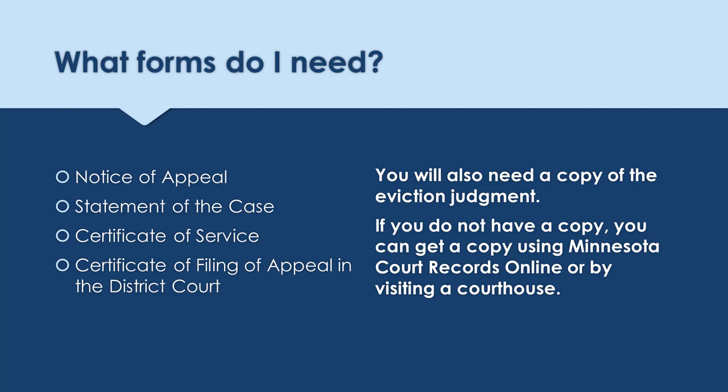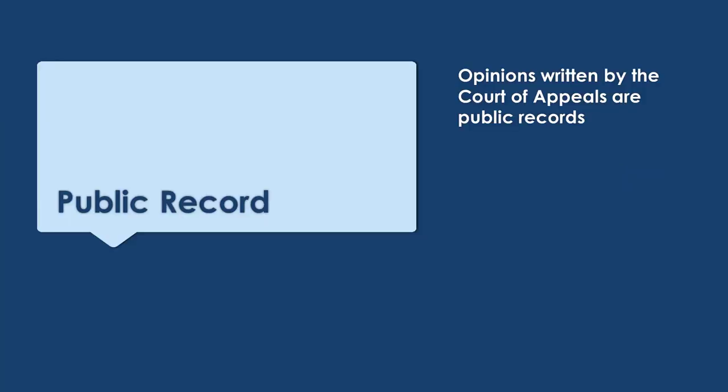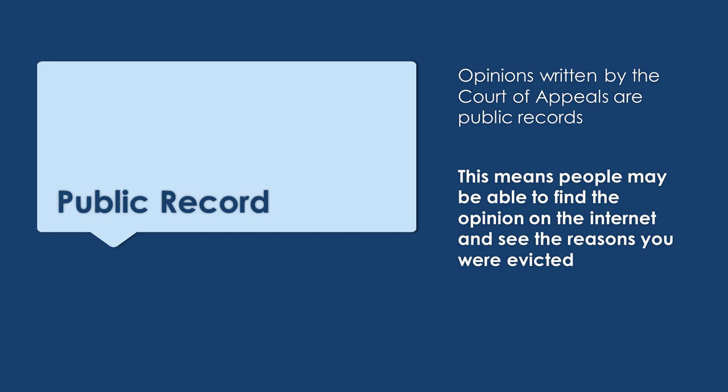Before we look at these forms, there are a few things you should be aware of. Once your appeal is decided, the Court of Appeals will issue a written decision known as an opinion. The opinion includes the facts of your case and the reasons for the judge's decision.